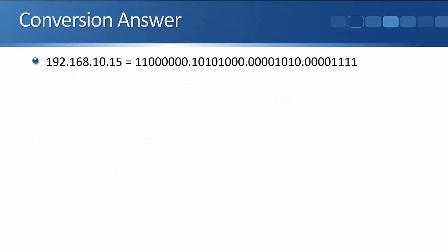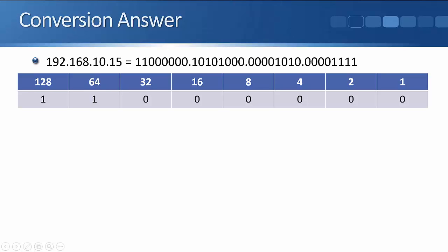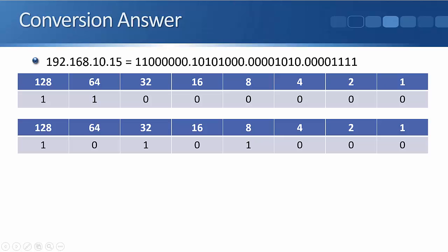Okay, hopefully this is the answer that you got: 192.168.10.15. The first octet was 11000000, 128 plus 64 equals 192. The next octet of 168 was 10101000, 128 plus 32 plus 8 equals 168.